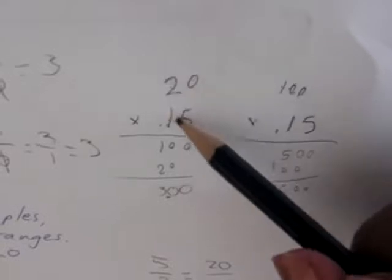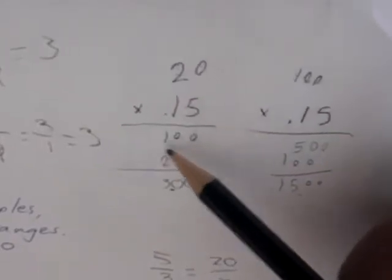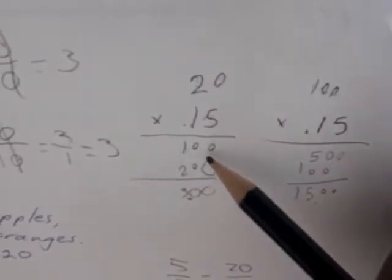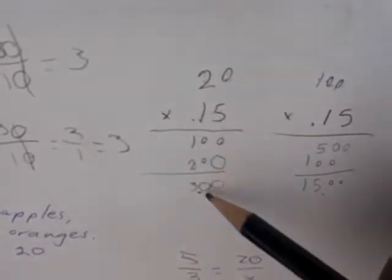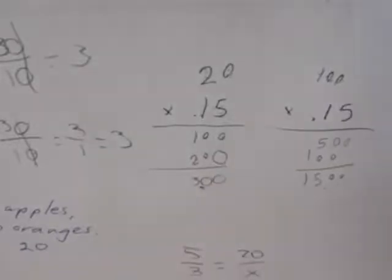So we're going to do 20 times 0.15. 0 times 5, 2 times 5, that's 100 together. Zero right there. Zero right there. 2 times 1 is 2. Add that together, it's $3 too when you keep the decimal.